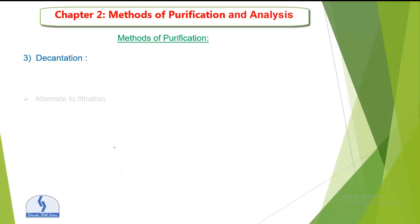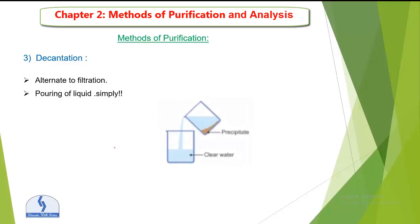Next is decantation. Decantation is the alternative to filtration for settling particles. It is simply the pouring of a liquid from one beaker to another. If filter paper is not available, we just pour the liquid — the clear liquid transfers to another beaker while the precipitate settles at the bottom. This is an alternative to filtration when filter paper is unavailable.